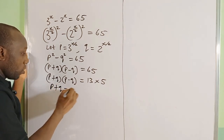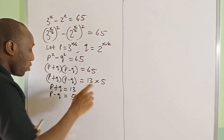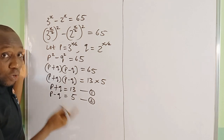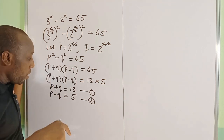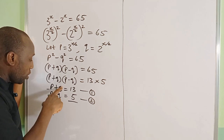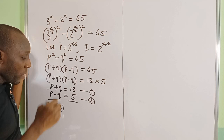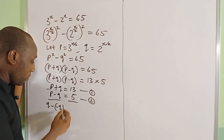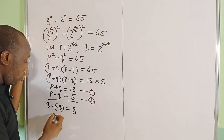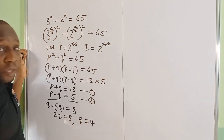That gives us: equation 1: p + q = 13, and equation 2: p − q = 5. We now solve these simultaneously. Let's eliminate p by doing equation 1 minus equation 2. p − p = 0, and q − (−q) = 2q, since minus minus is plus. So 2q = 13 − 5 = 8.